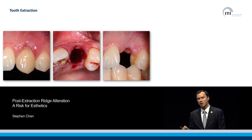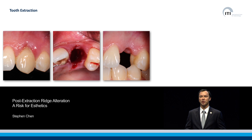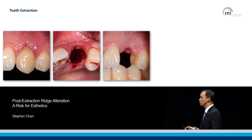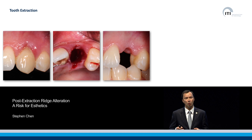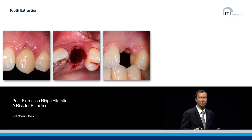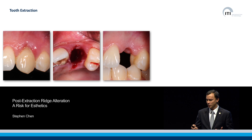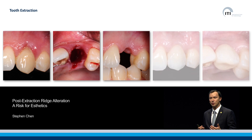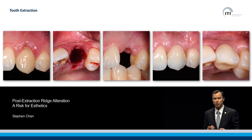We know that when teeth are taken out, the body is very efficient — the body heals itself, as you can see in the slides here, post-extraction. But there are certain changes that take place to the underlying bone, or what we like to refer to as dimensional alterations that take place to the contour of the bone. And, of course, this has implications for the supporting soft tissues.